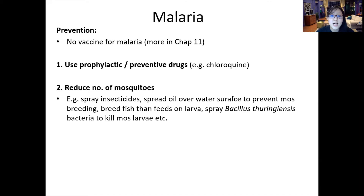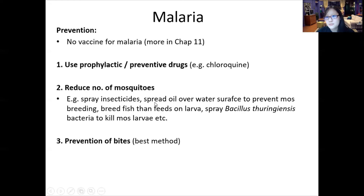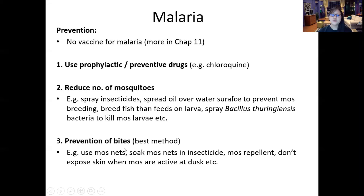CIE suggests several methods to reduce mosquitoes: spray insecticides, spread material over water surfaces to prevent breeding, breed fish that feed on larvae, and spray bacteria that can attack and kill mosquito larvae. Best prevention is to prevent bites altogether: use mosquito nets soaked in insecticide, use mosquito repellant, and avoid exposing skin when mosquitoes are active at dusk.